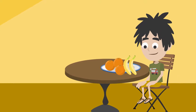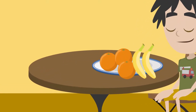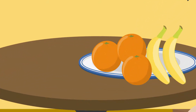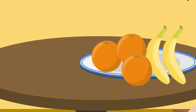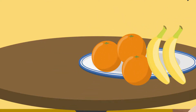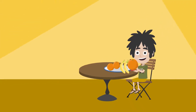Now, let us count these fruits from Rodrigo's plate. So, he has one, two, three oranges, and two bananas. Should we also eat fruits like Rodrigo? Yes, of course!